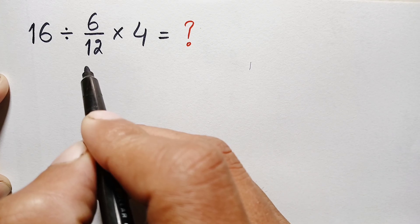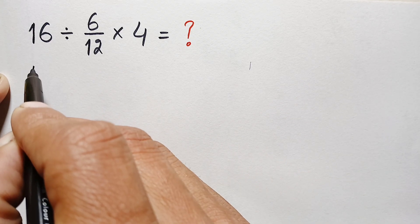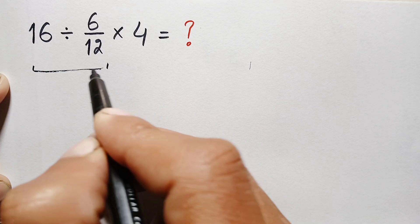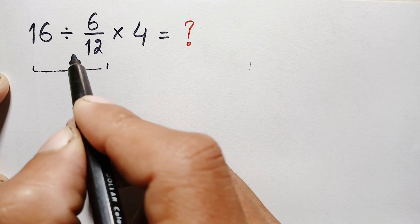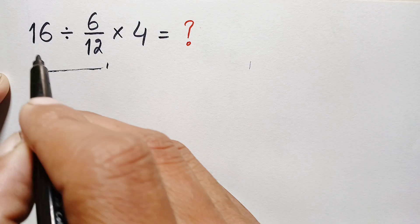Therefore, we will try to do division first. We will divide 16 with this fraction. We cannot directly divide these two numbers, so we will apply the KFC rule.